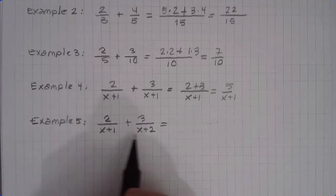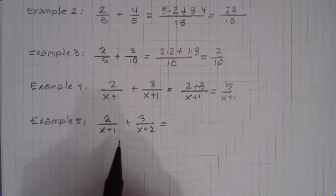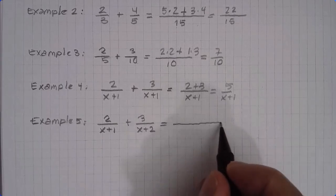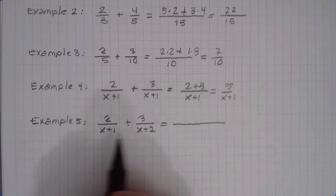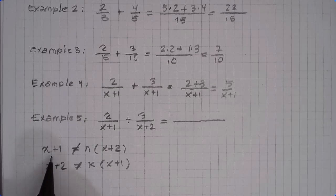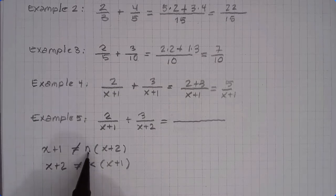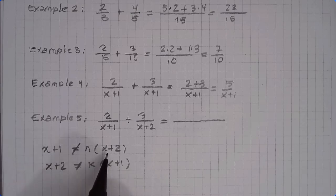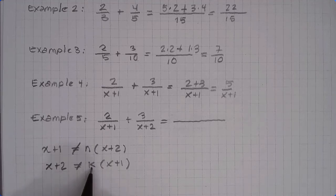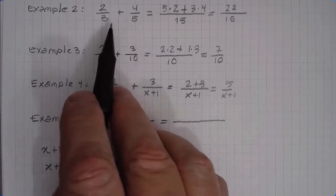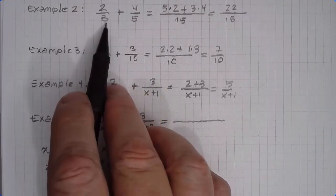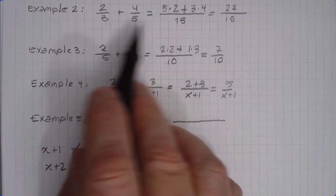If the two denominators are algebraic expressions that are not the same, we want the smallest expression that is a multiple of both. Now, x plus 1 is not a multiple of x plus 2, and x plus 2 is not a multiple of x plus 1. So we are in a situation similar to before — 3 is not a multiple of 5, and 5 is not a multiple of 3. So we choose the product: 3 times 5 is 15.